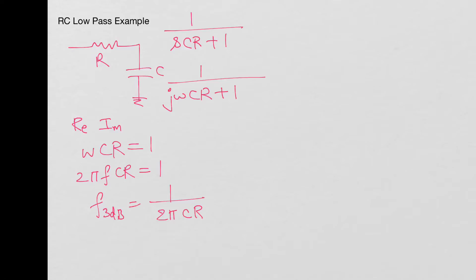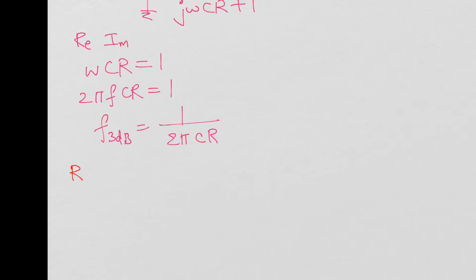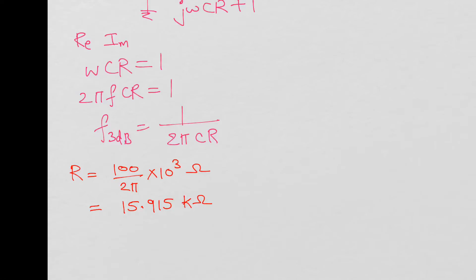So this is the 3dB frequency that we calculated. Now let's choose R and C such that it's easy for us to do some calculations. I want to choose R = 100/(2π) kilohms, which is multiplied by 10³ ohms — that works out to 15.915 kΩ. For C, I will choose conveniently 1 nanofarad, that is 1×10⁻⁹ farads.